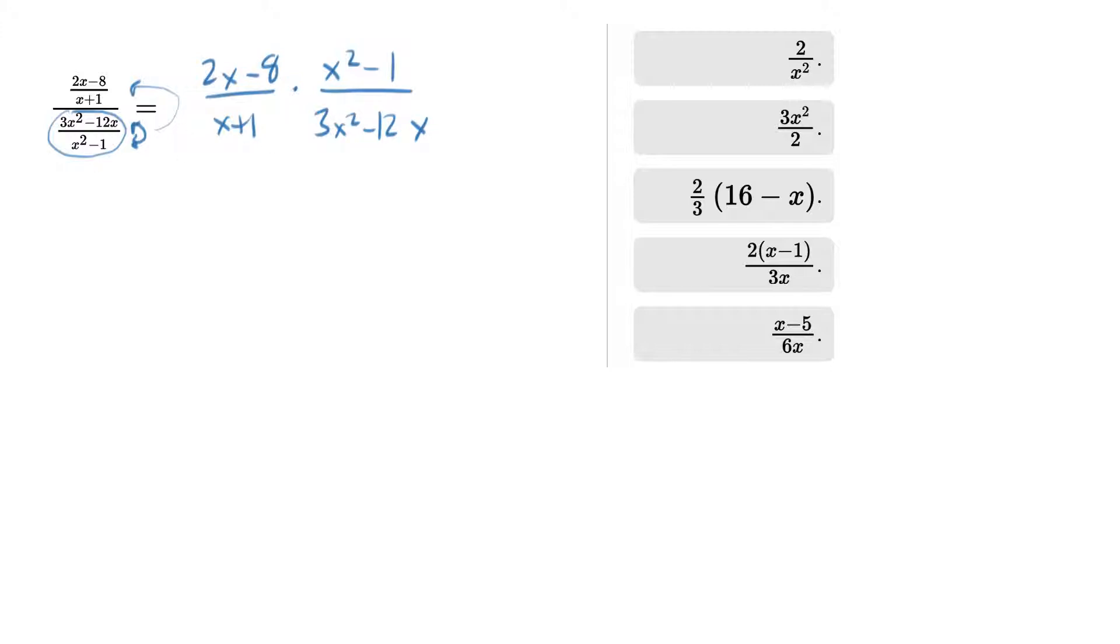Now I see a simplification opportunity here, and you need to spot these whenever you're on the test. If you have the difference of two squares, that's a code and you need to convert this into x plus 1 times x minus 1. I always convert that immediately whenever you see it. Once you do that, you see that there's an x plus 1 in the numerator and denominator. We can cross those out.